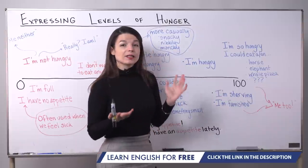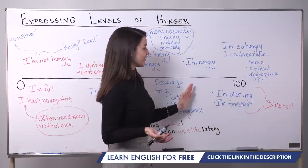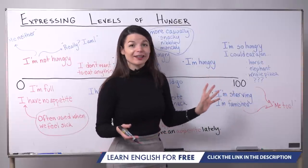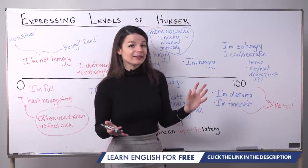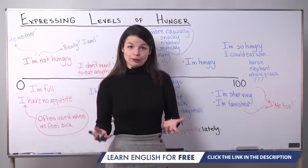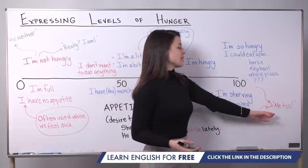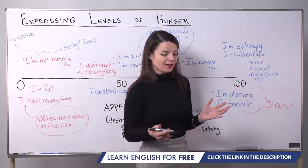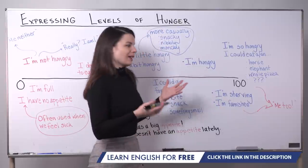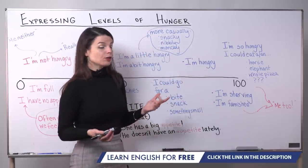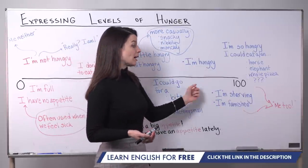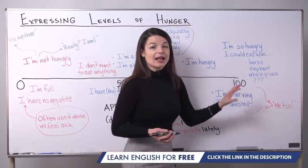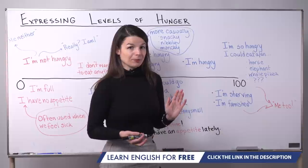When you want to respond to something like this — if your friend says 'I'm hungry,' 'I'm starving,' or 'I'm so hungry I could eat a whole pizza' — and you want to agree, just say 'me too.' That's the best and most natural way. You could also say 'I'm hungry too' or 'I'm starving too,' but 'me too' is the easiest, quickest, most natural response.